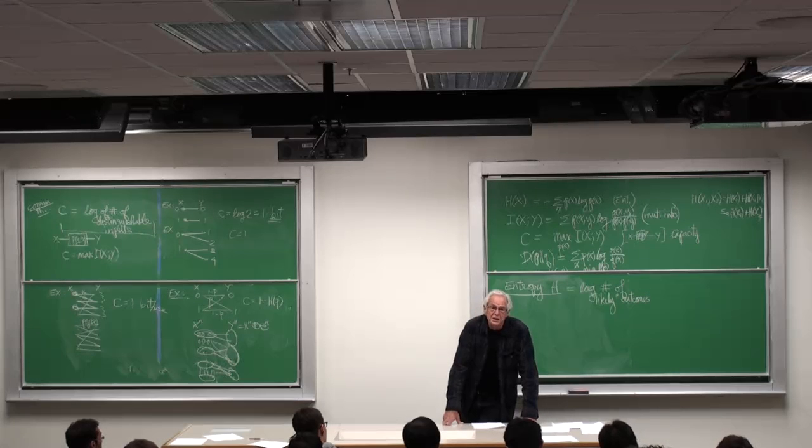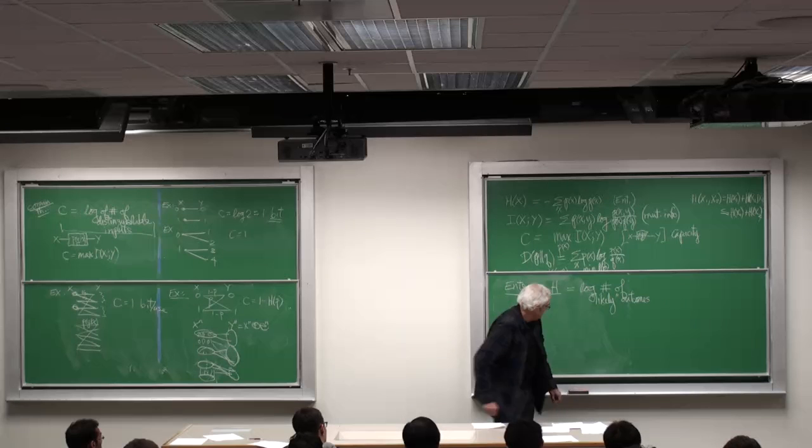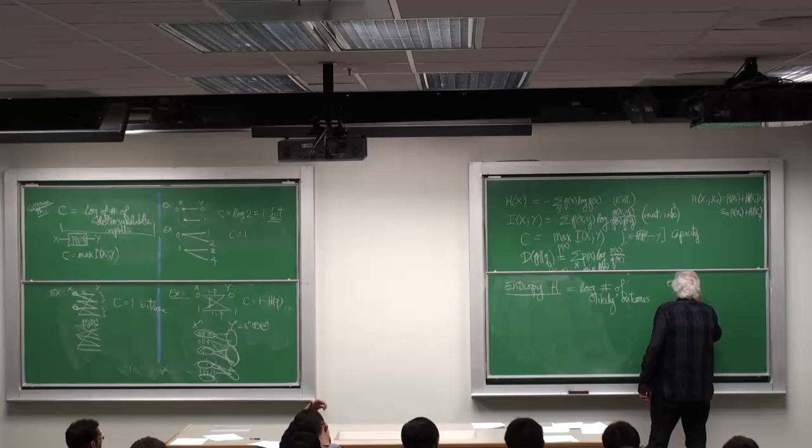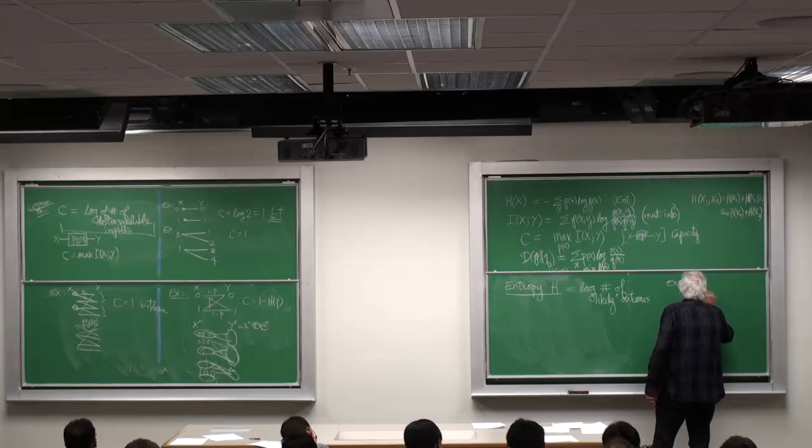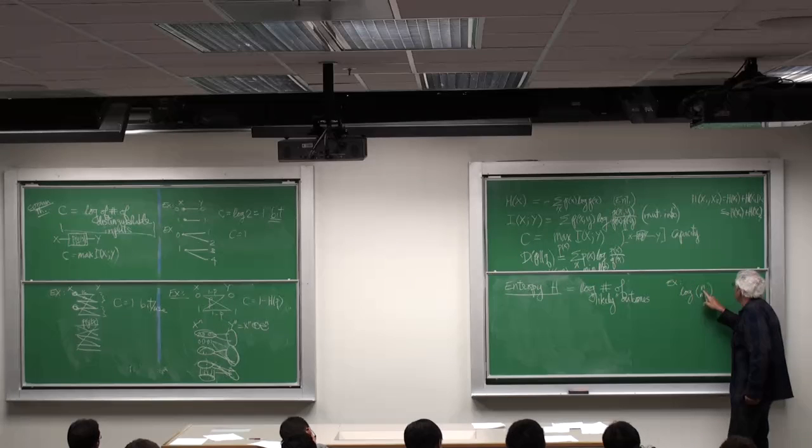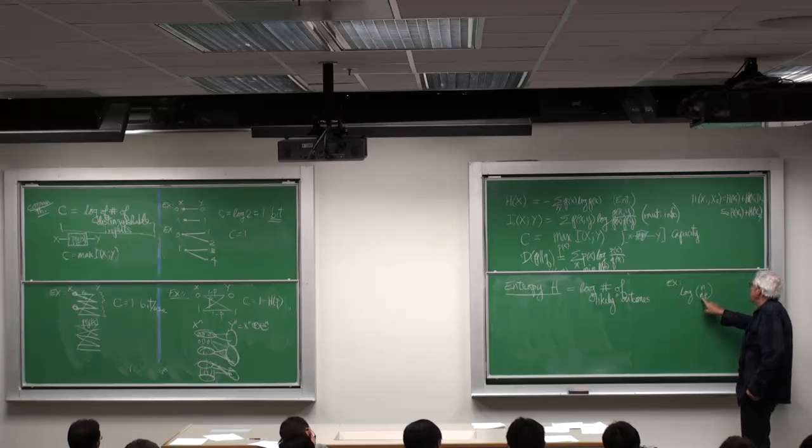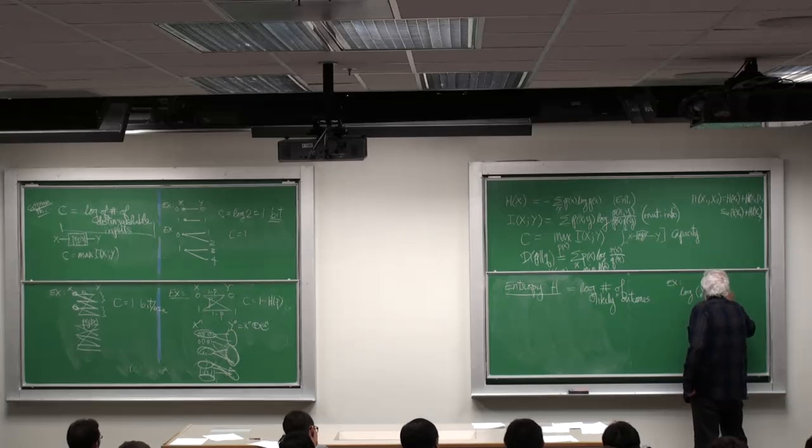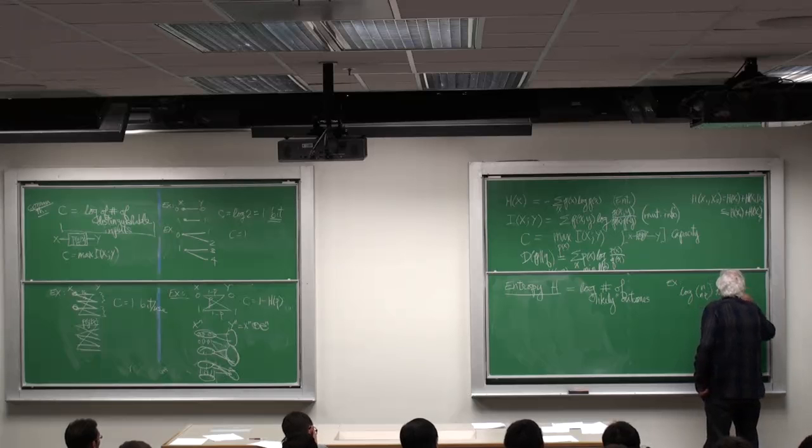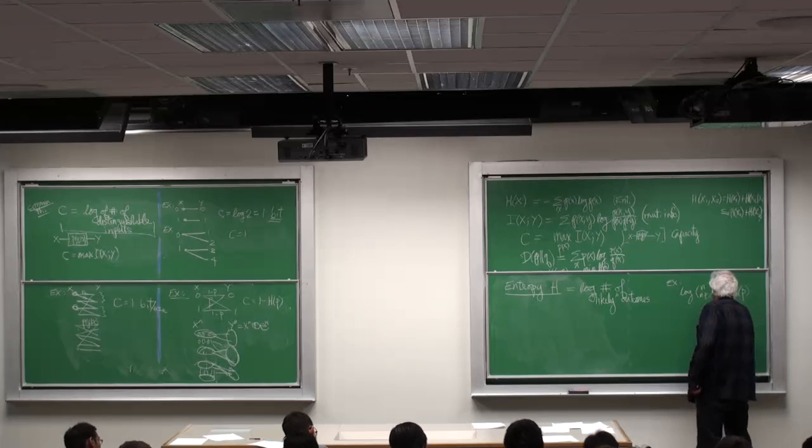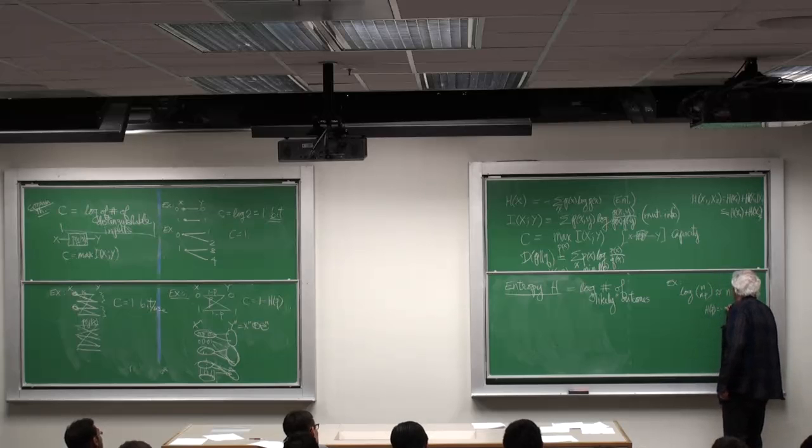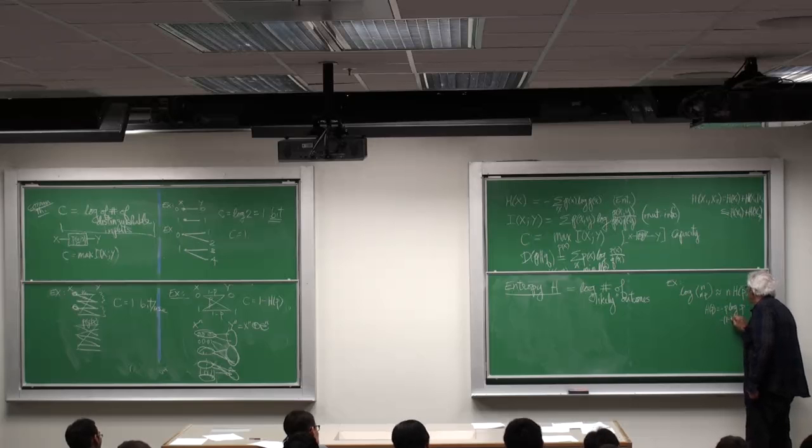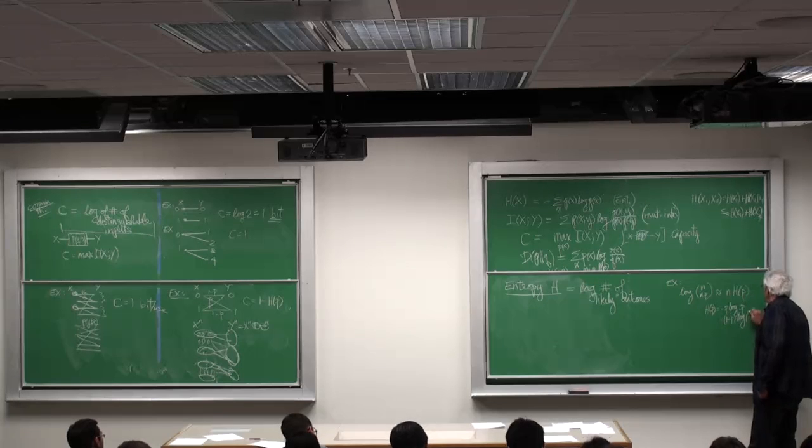How many such sequences are there? Well, for that example, we have log of n choose np. That is sequences of length n on which np of the terms are ones and the others are 0. But this turns out to be n H of P, where H of P is minus P log P, it's the entropy, minus 1 minus P log 1 minus P.